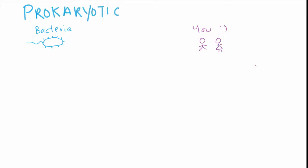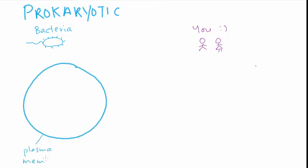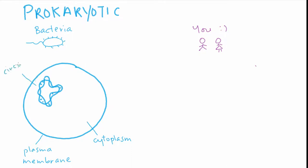All prokaryotes are single-celled and have key characteristics. First they have a plasma membrane, which is filled with a substance called the cytoplasm. In the cell you will also find DNA which codes for all the proteins that the cell can produce. The machines that build those proteins are called ribosomes.